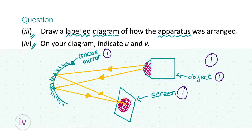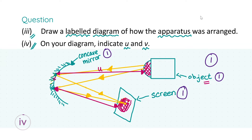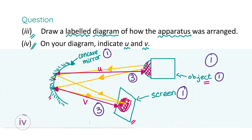In part four we need to indicate what U and V are on the diagram. U is the object distance — the distance from the object to the back of the mirror — and V is the image distance, from the image to the back of the mirror. For each label done correctly you get three marks: three marks for U and three marks for V.